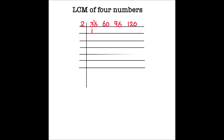Dividing each number by 2: 36 ÷ 2 = 18, 60 ÷ 2 = 30, 96 ÷ 2 = 48, and 120 ÷ 2 = 60. Again all the numbers are even, so we can use 2 to divide again: 18 ÷ 2 = 9, 30 ÷ 2 = 15, 48 ÷ 2 = 24, and 60 ÷ 2 = 30.